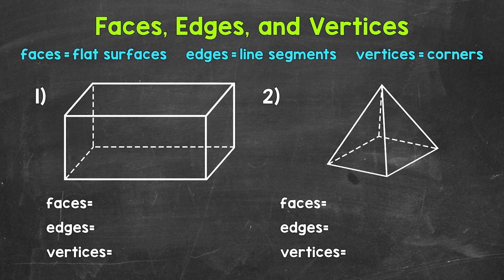Now, faces are the flat surfaces that make up a solid figure, so a 3D figure. Edges are the line segments that are formed by two faces meeting. And then vertices, which is the plural form of vertex, are the corners or points. Vertices are formed by three or more edges meeting.